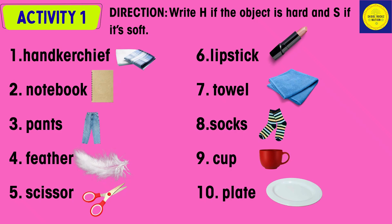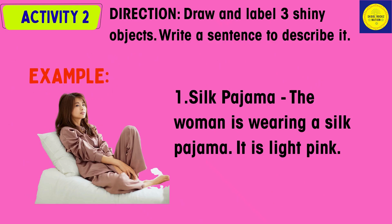Lipstick, towel, socks, cup, plate. Activity 2: Draw and label 3 shiny objects and write a sentence to describe each one.